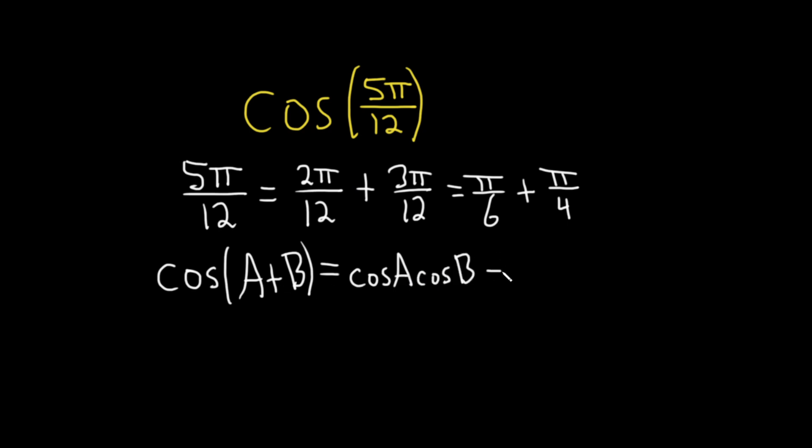Then you flip the sign and then it's always sine sine. So sine A, sine B. So for the cosine sum and difference identities, the cosine always comes first and the sine always comes second. And then you just flip the sign and you're good to go.